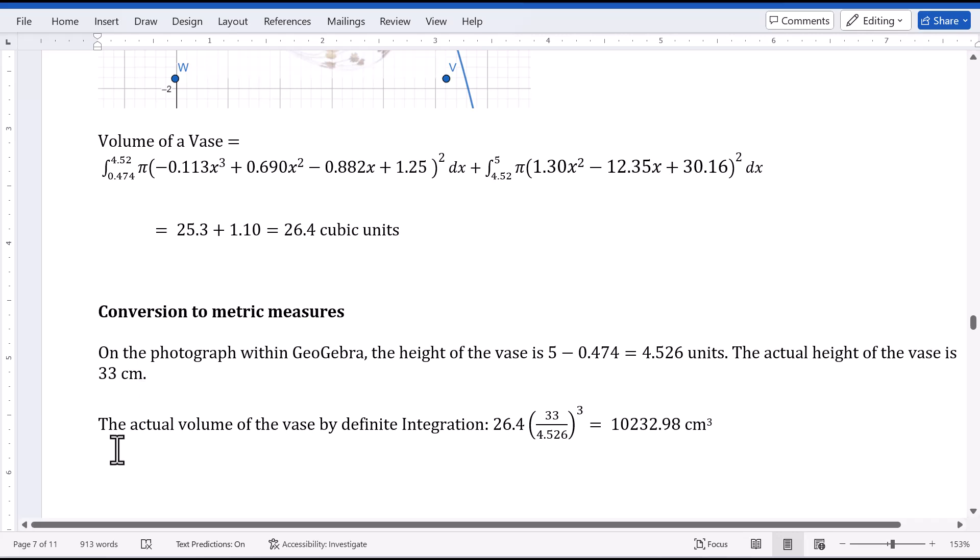So we can figure out the actual volume of the vase by definite integration. 26.4 times 33 over 4.526 to the third power. This is a scale factor. Then we got 10,232.98 cubic centimeters.